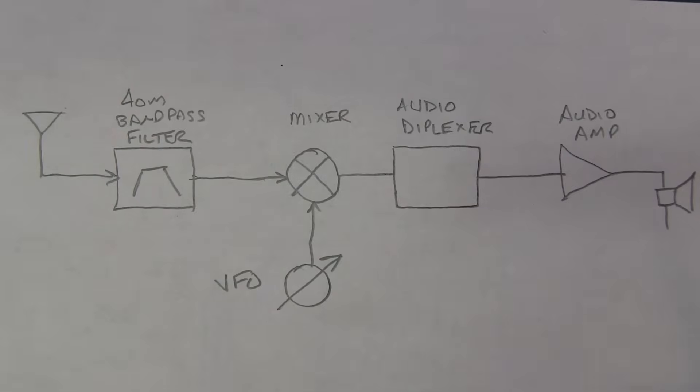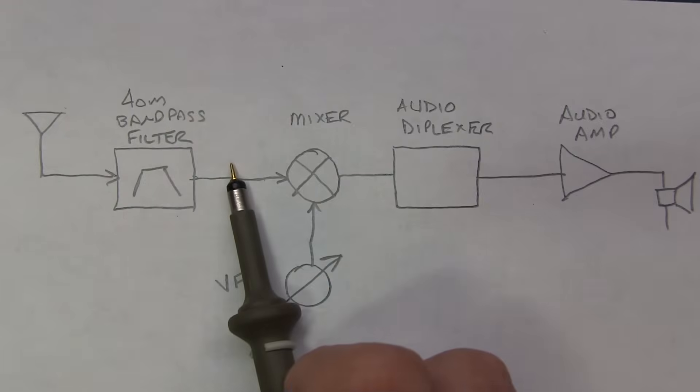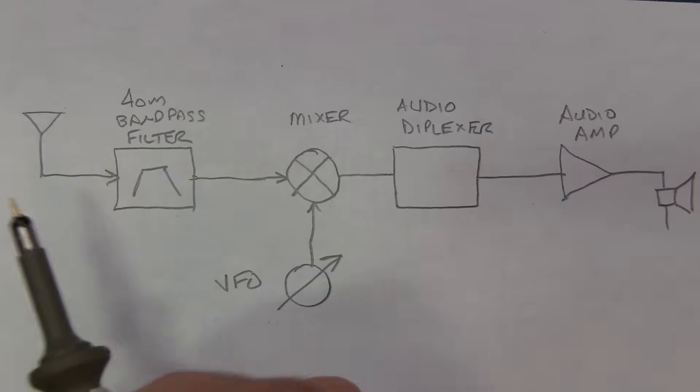The block diagram of the receiver is pretty simple. The antenna input goes into a 40-meter bandpass filter, designed really just to allow the 7 to 7.3 MHz signals within the 40-meter amateur radio band to pass through and reject out-of-band signals that might overload the receiver, such as broadcast AM and that type of thing.